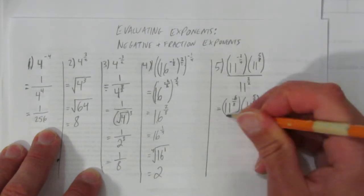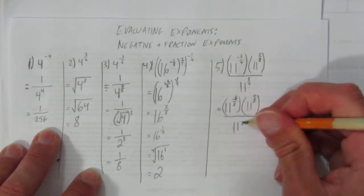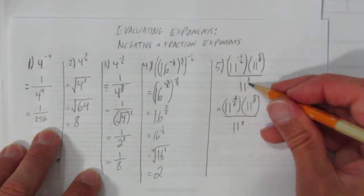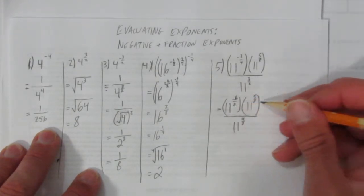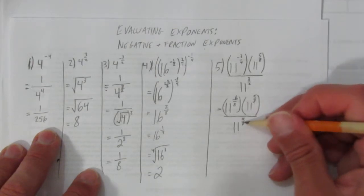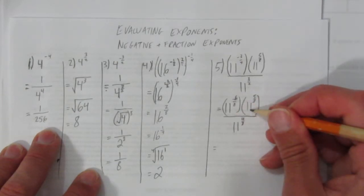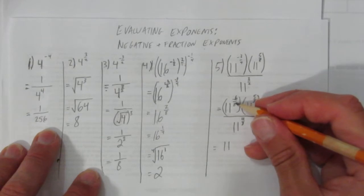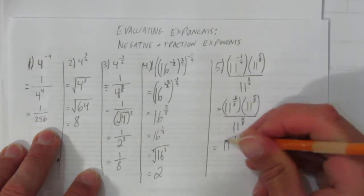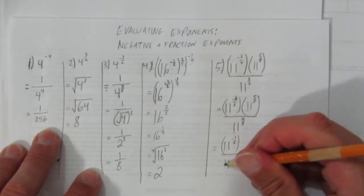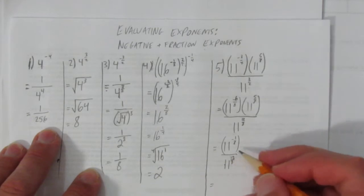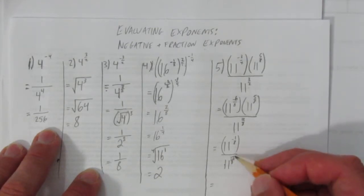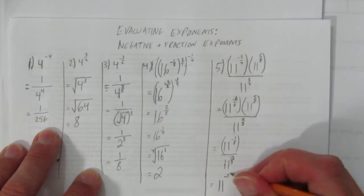I'll also convert 3 halves to the same denominator: 3 over 2 becomes 12 over 8. So I have 11 to the negative 6 over 8, times 11 to the 5 over 8, divided by 11 to the 12 over 8. Adding the first two exponents: negative 6 eighths plus 5 eighths equals negative 1 eighth. Then for division, subtract exponents: negative 1 over 8 minus 12 over 8 gives 11 to the negative 13 over 8.